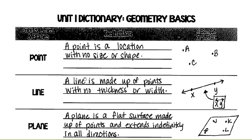Line: a line is made up of points with no thickness or width. It has no thickness and no width, so it's just letting you know direction — pretty much the x and y points. This is called line XY, and this is how you draw the symbol for line XY.